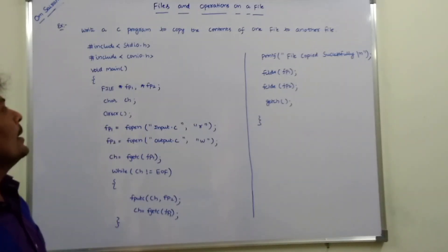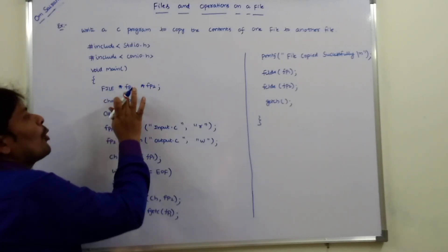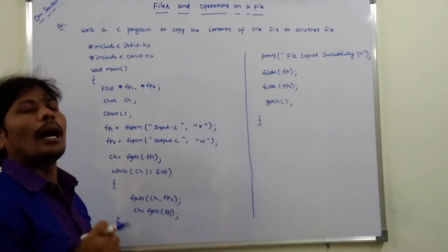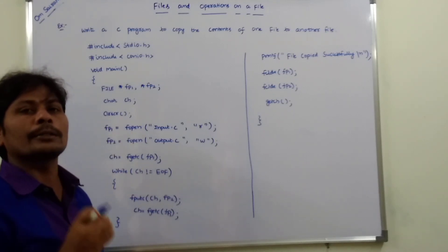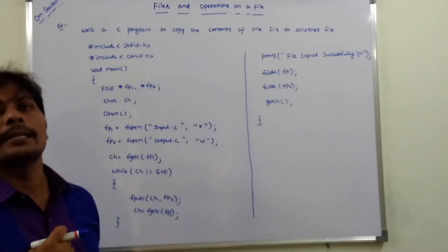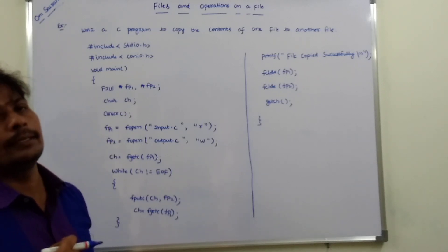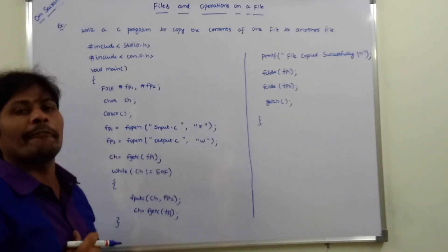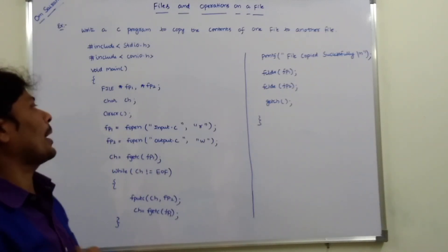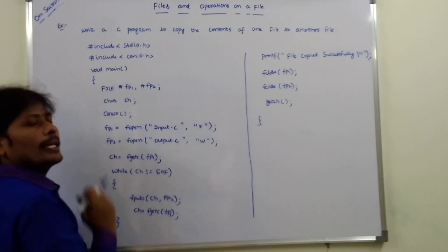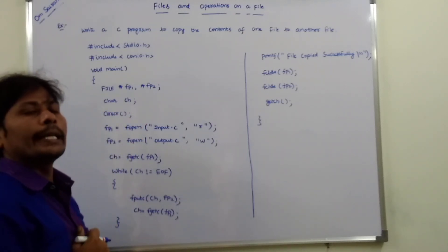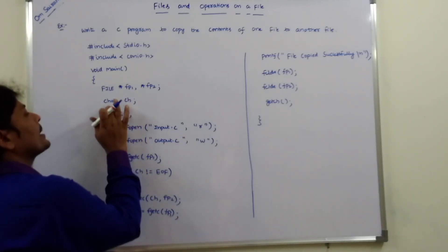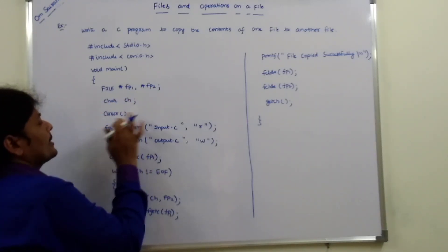Next, void main. Here we declare file pointer fp1, fp2. fp1 and fp2 are two file pointers that have the data type called FILE, written in capital letters. Next, char ch — we have to declare a variable ch whose data type is character. Then clrscr.